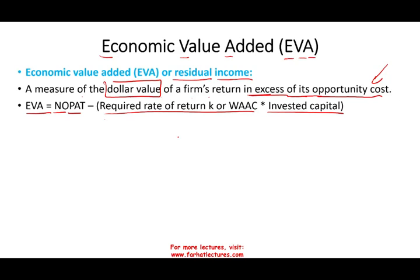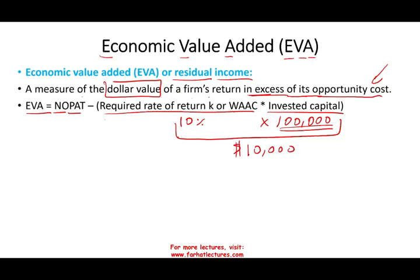What's the invested capital? It's how much assets you have that you are using for the company. For a simple example: we have $100,000 worth of assets and our required rate of return — whether you call it WACC or required rate of return — is 10%. That means we need to return 10%, so $100,000 times 10% gives us $10,000. If our actual operating income or NOPAT is $15,000, then we are $5,000 higher. Our economic value added is $5,000.